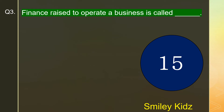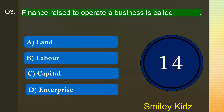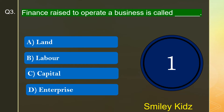Question number 3. Finance raised to operate a business is called dash. The options are A. Land, B. Labor, C. Capital, or D. Enterprise. Your turn starts now. The right answer is option C. Capital. Finance raised to operate a business is called capital.